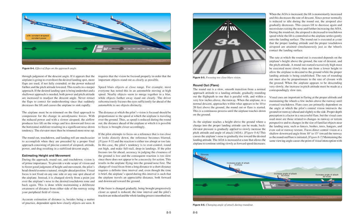The distance at which the pilot's vision is focused should be proportionate to the speed at which the airplane is traveling over the ground. As speed is reduced during the round-out, the distance ahead at which it is possible to focus is brought closer accordingly. If the pilot attempts to focus on a reference that is too close or looks directly down, the reference becomes blurred and the reaction is either too abrupt or too late — the pilot's tendency is to over-control, round-out high, and make full-stall drop-in landings. If the pilot focuses too far ahead, accuracy in judging the closeness of the ground is lost and the airplane may fly into the ground nose first.